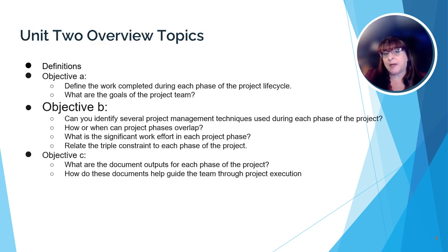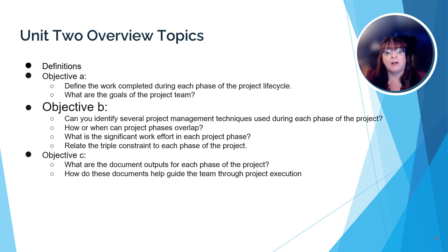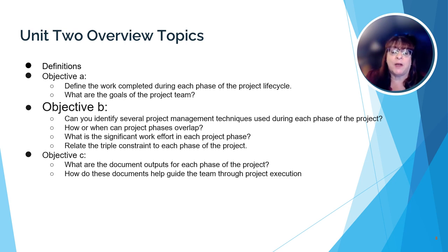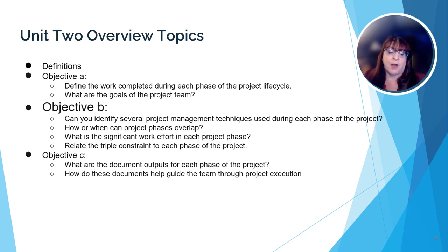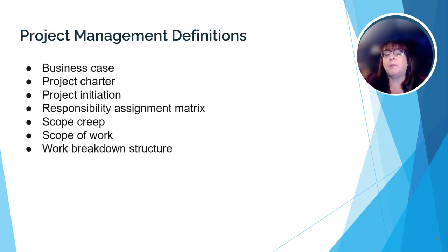Here are our objectives and questions we hope to answer as we complete this unit. We're going to look at some definitions, define the work completed during each phase of the project lifecycle and what the goals are of the project team, identify several project management techniques used during each phase of the project, how or when the project phases overlap, what the significant work effort in each project phase is, relate the triple constraint to each phase, what the document outputs are for each phase, and how those documents help guide the team through project execution. While you'll find many more vocabulary words in the study guide, in this review we're going to concentrate on a few key terms, so keep an ear out for them as they come up.